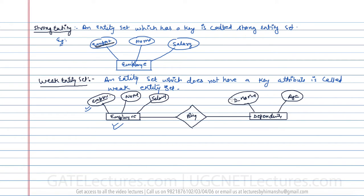For the dependent entity there is something called a partial key. Here, dependent name can act as a partial key. If we use this partial key along with the key attribute of the employee entity, we can uniquely identify a dependent. With the help of a key attribute in a relation we can uniquely identify every record — for example, a roll number can uniquely identify a student in a class.